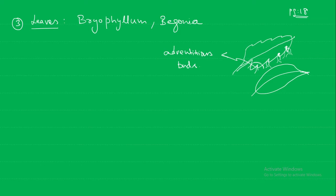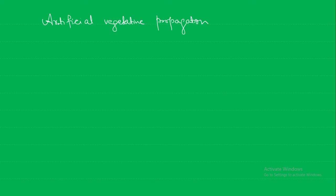Next is artificial vegetative propagation. We are calling it artificial because humans are doing it — not nature. Where vegetative propagation by natural methods is difficult, human beings carry out special methods. These methods are called artificial vegetative propagation, and they include cutting, layering, and grafting.